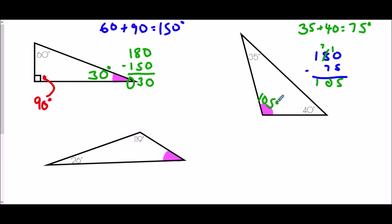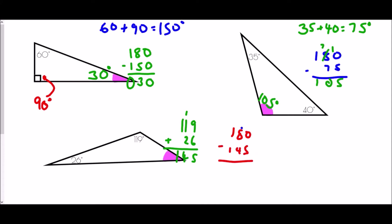The last triangle has a 26 degree angle and a 119 degree angle. Adding those together: 6 plus 9 is 15, 1 plus 1 plus 2 is 4, and the 1 — so that's 145. To find the missing angle I subtract from 180: 10 take away 5 is 5, 7 take away 4 is 3, 1 take away 1 is 0. So the last angle is 35 degrees.